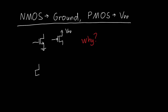If we have an NMOS transistor connected to ground, the NMOS has three terminals: a gate, a drain, and a source. In order to be on, that transistor needs the voltage from the gate to the source to be greater than the threshold voltage of that transistor.